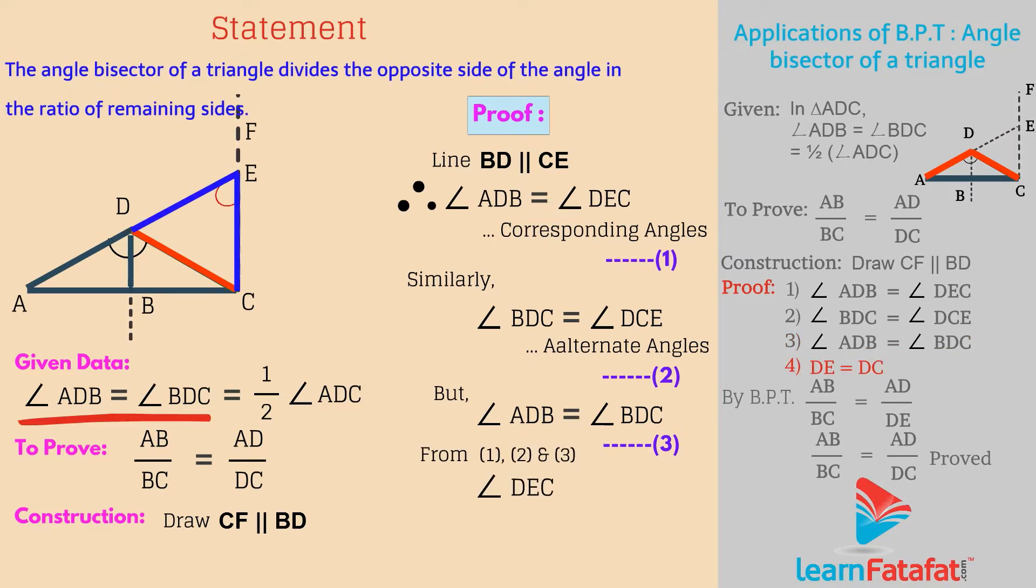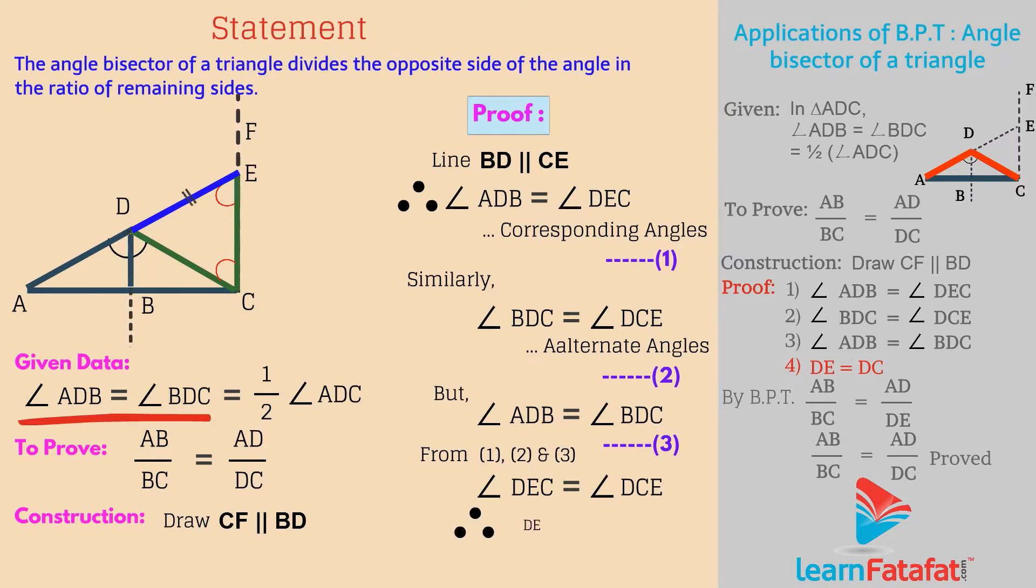So, from 1, 2, and 3, we get angle DEC is equal to angle DCE. Now, in triangle DEC, as angle DEC is equal to angle DCE, therefore side DE is equal to DC, because sides opposite to equal angles of a triangle are equal. This is relation 4.